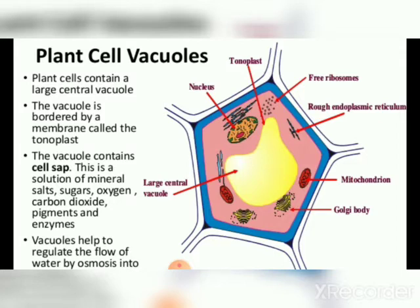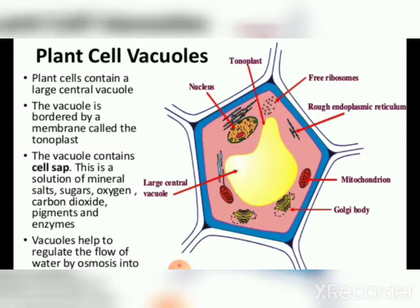रिक्तिकाओं में तनू विलयन भरा होता है, इसे कोशिका रस या धानी रस कहते हैं। यह उदासीन या तनू अम्लीय प्रकृति का होता है। कोशिका रस में कई पदार्थ घुलित रूप में उपस्थित होते हैं जैसे फॉस्फेट्स, कार्बोहाइड्रेट्स जैसे ग्लूकोस, सुक्रोज, इनुलीन, अमाइलेट्स, अमीनो अम्ल, कार्बनिक अम्ल जैसे ऑक्सैलिक, टार्टरिक, सिट्रिक ऐसेट, उत्सर्जी पदार्थ जैसे टैनिन, अल्कॉलाइड्स, ग्लुकोसाइड्स। कुछ पादपों में कोशिका रस में एन्थोसाइनिन वर्णक भी घुले रहते हैं जिससे पत्तियों व पुष्पों में बैंगनी, लाल व नीले रंग उत्पन्न होते हैं।